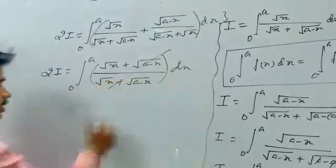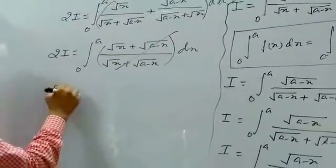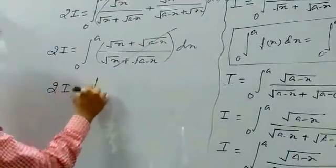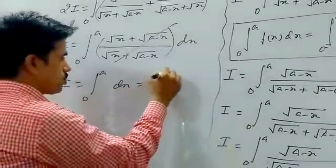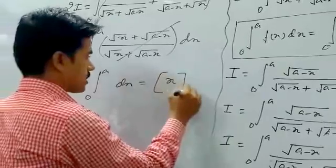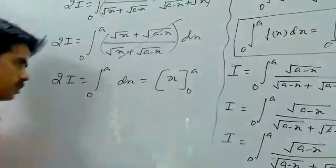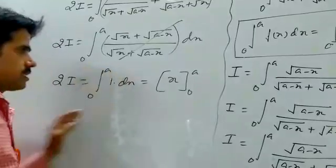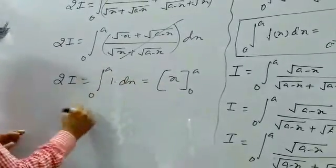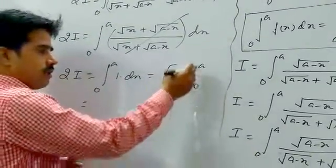The numerator and denominator are cancelled. We get 2I is equal to integral from 0 to A of dx. It is equal to x evaluated from 0 to A. We know that the integral of 1 is x. We apply the properties of definite integration.